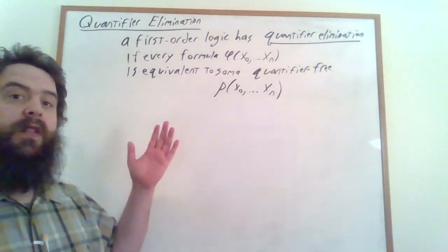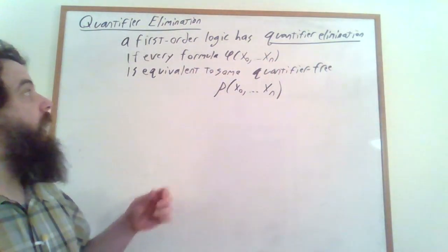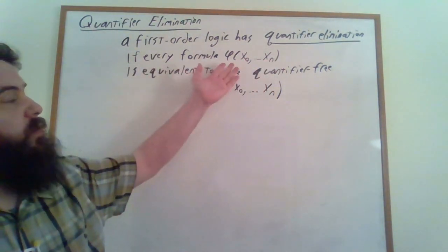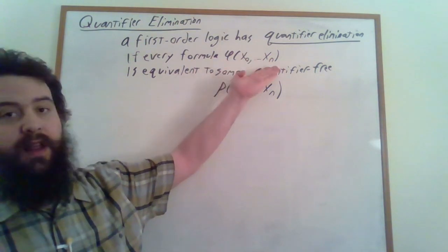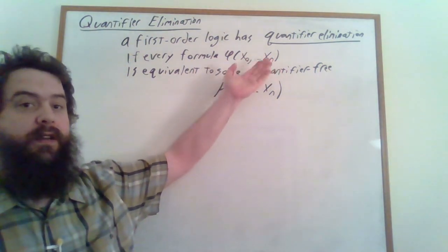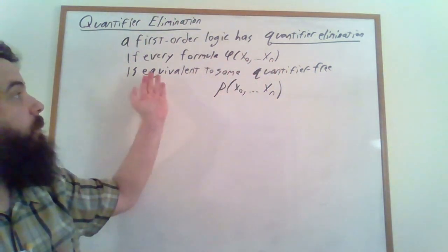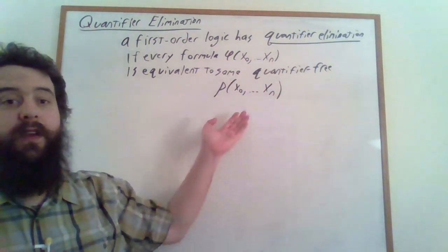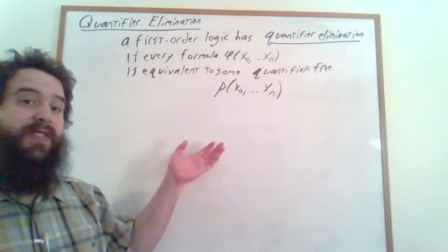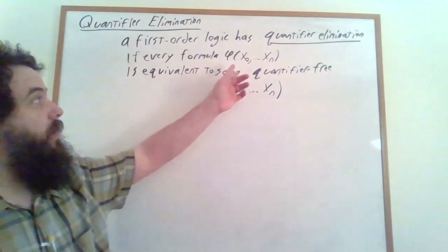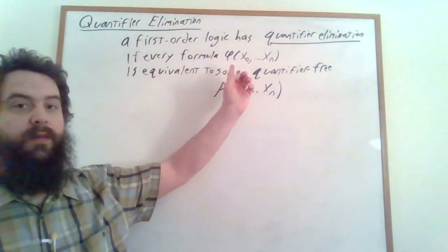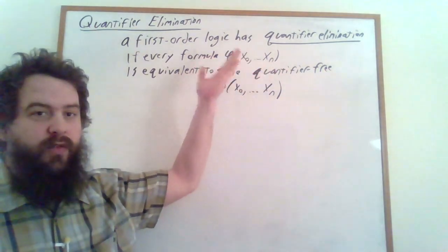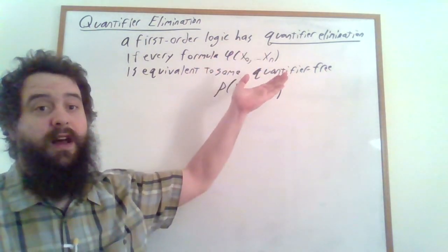We say that a first-order logical theory has quantifier elimination if every time we have some sort of formula that has potentially some free variables in it, we can convert it into some equivalent quantifier-free formula that has those same free variables. This is trivially true if there are no free variables in this formula — if this formula is a sentence, then it's either true or false within our particular context.